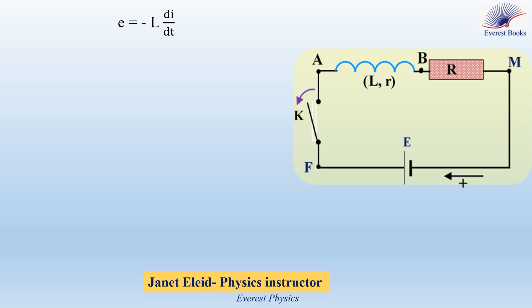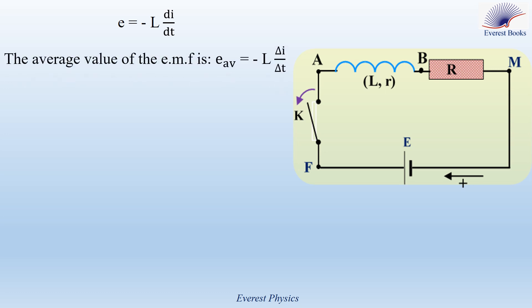The expression of the induced electromotive force is given by Faraday's law: E equals minus L dI/dt. The average value of the electromotive force is E_average equals minus L delta_I over delta_t. Delta t is the time needed for the current to decrease from its maximum value to zero when the switch is opened. Delta t equals five tau, where tau equals L, the inductance of the coil, over the equivalent resistance of the circuit.